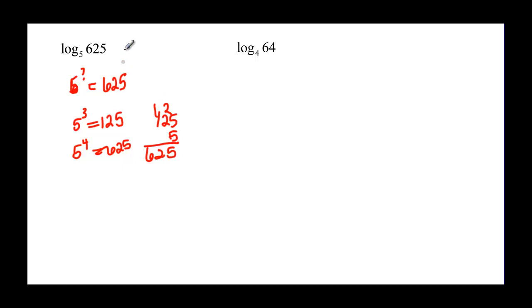5 plus one more makes 6. So sure enough, 5 to the 4 is 625. That's the ways you can figure these out.